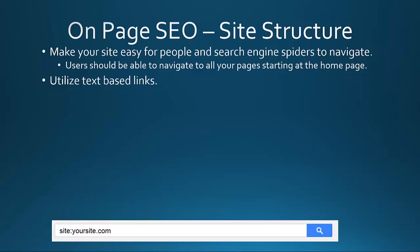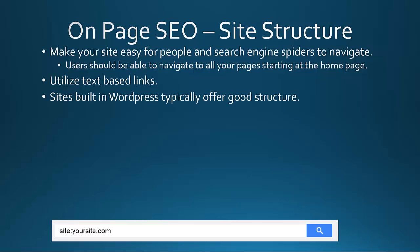That means everything from your navigation for your categories, for your blog posts, for your articles, for your products — it should all be accessible from the home page in an easy, laid-out format that's easy on the eyes. If people can do that, the search engines can do that, because you want to make sure that the search engines are finding all your content possible.